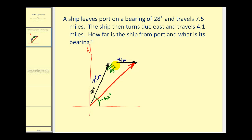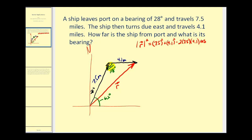Now we can determine the length of this vector — its magnitude — and that'll be the distance from the port. Let's label this vector r and find its magnitude using the law of cosines. The square of the magnitude of vector r is equal to 7.5 squared plus 4.1 squared minus 2 times 7.5 times 4.1 times the cosine of 118 degrees.